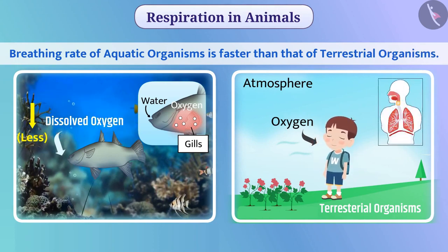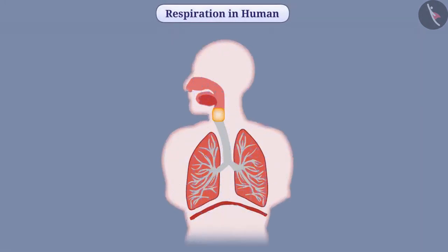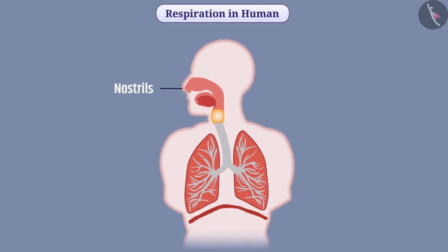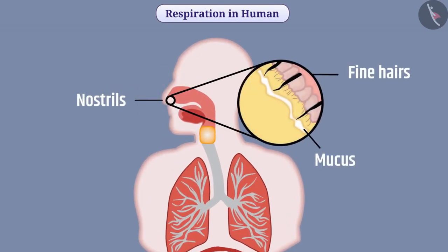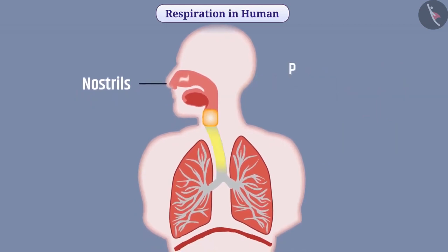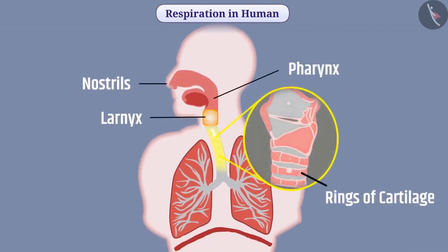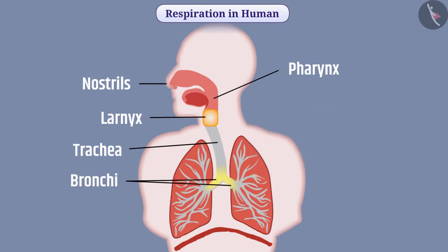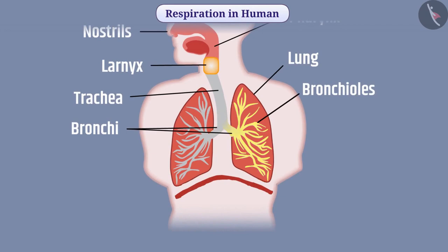In different terrestrial organisms, oxygen is absorbed by different organs. In humans, air enters inside the body through nostrils, which consist of a layer of fine hairs and mucus that filter the air so that dust and impurities do not enter the body. After this, the air reaches the trachea via pharynx and larynx. Rings of cartilage are present in the trachea to ensure the air passage does not collapse. Air then travels via the bronchus and bronchioles into the lungs.